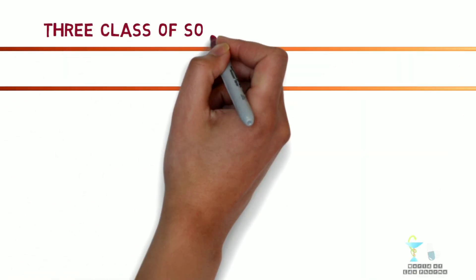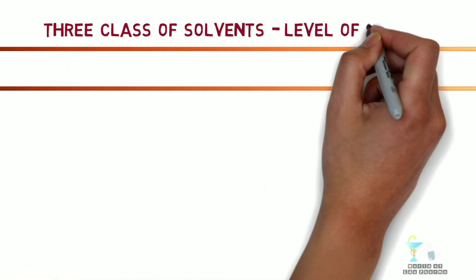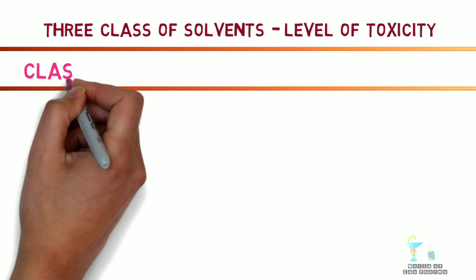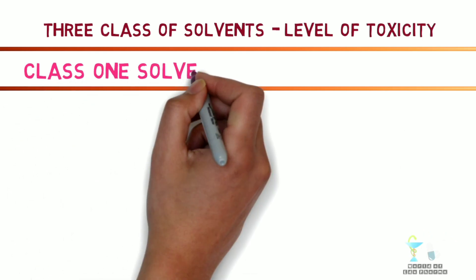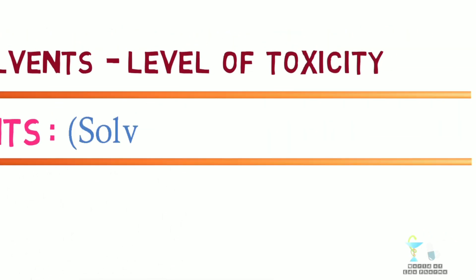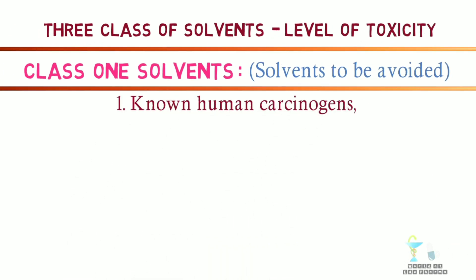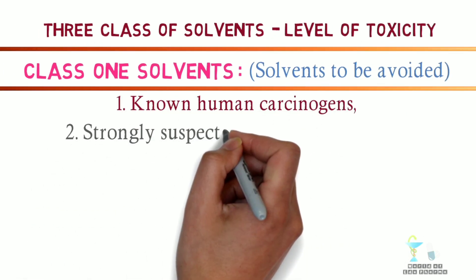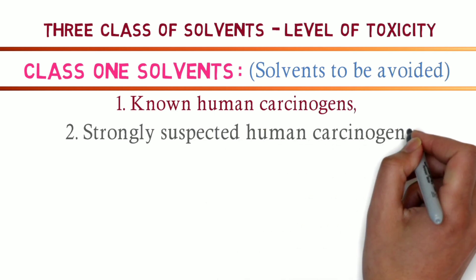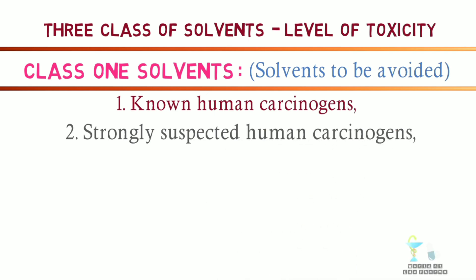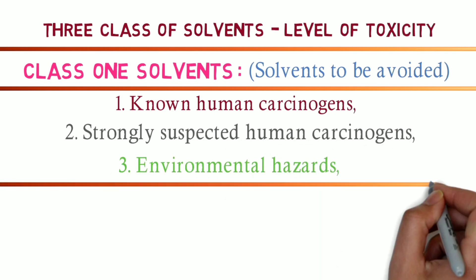There are three classes of solvents based on their level of toxicity. Class 1 solvents are solvents to be avoided. Known human carcinogens, strongly suspected human carcinogens, and environmental hazards come under this class.